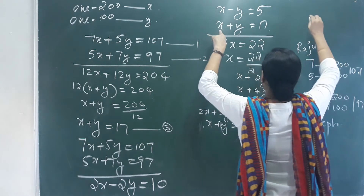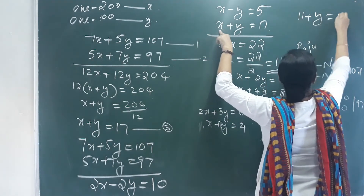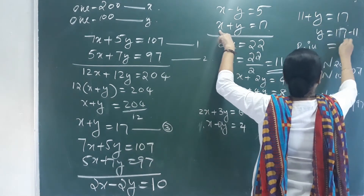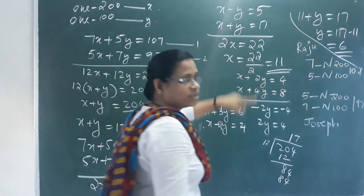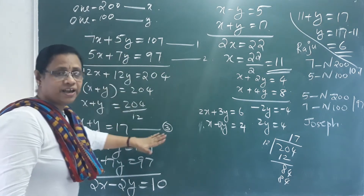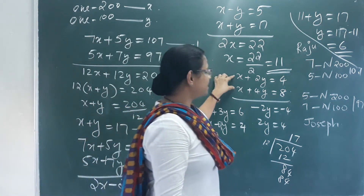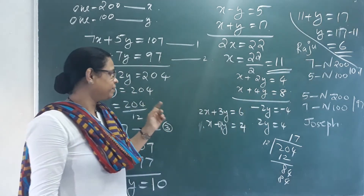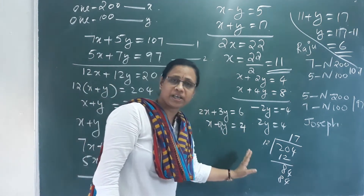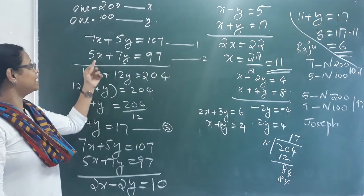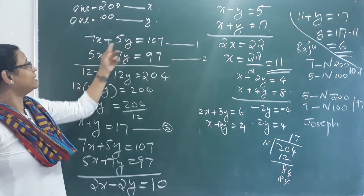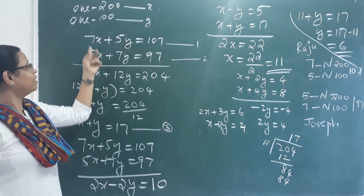Now we find y. Substituting x equals 11 into x plus y equals 17: 11 plus y equals 17, so y equals 17 minus 11, which is 6 rupees. The price of a 100-page notebook is 6 rupees. To summarize the method: if coefficients differ, multiply one or both equations and then add or subtract to eliminate a variable.